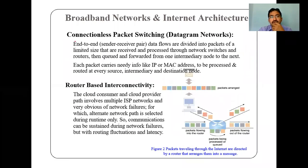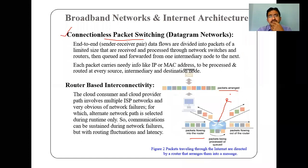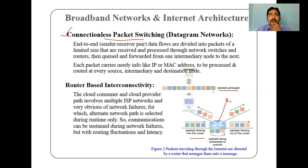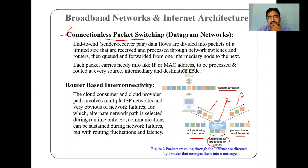The second sub-topic of broadband networks and internet architecture is datagram networks, also called connectionless packet switching. If you observe the figure, when packets flow through routers — the middle component is called a router — packets are sent as datagrams. You are already aware of packets, how we send datagrams with source address, destination address, and some extra bits added to the packet.